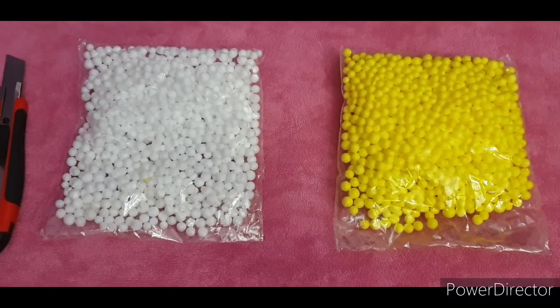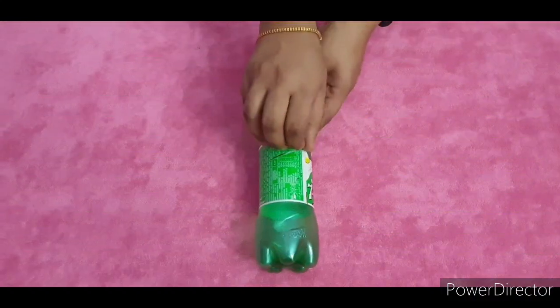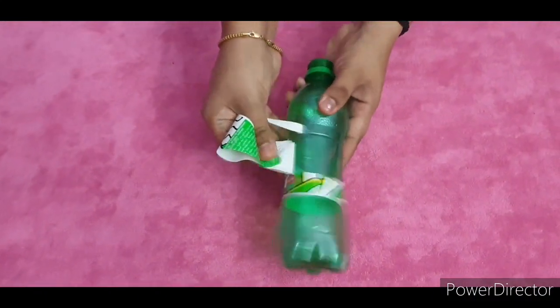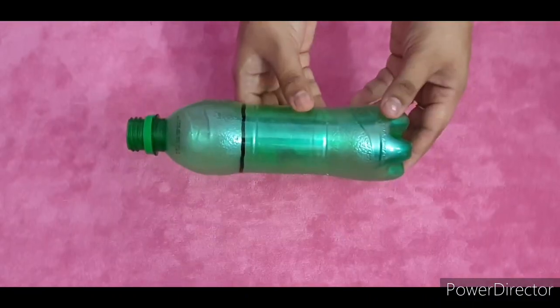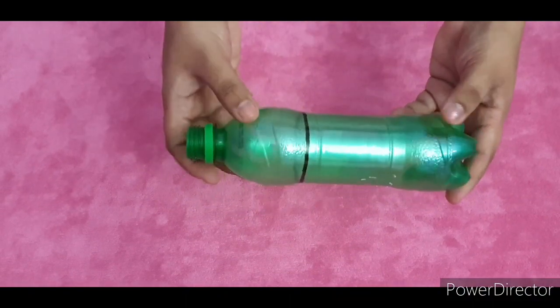The first step is to peel off the sticker from around the bottle. Now cut the bottle on the line by using a bottle cutter.